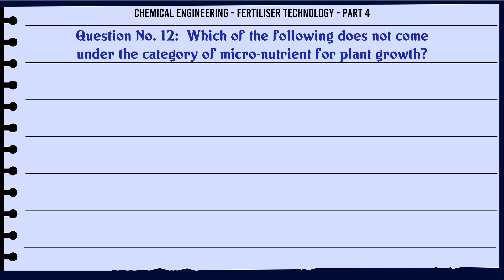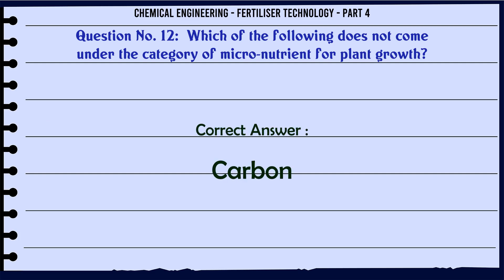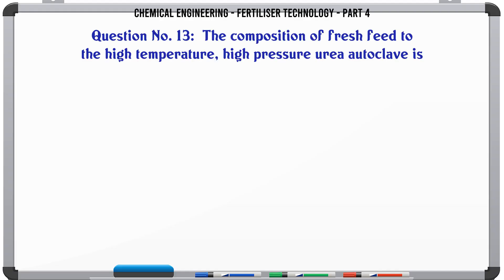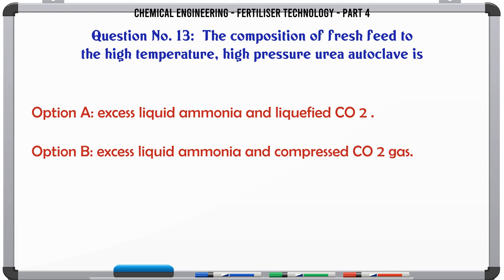Which of the following does not come under the category of micronutrient for plant growth? a. chlorine, b. iron, c. boron, d. carbon. The correct answer is: carbon.